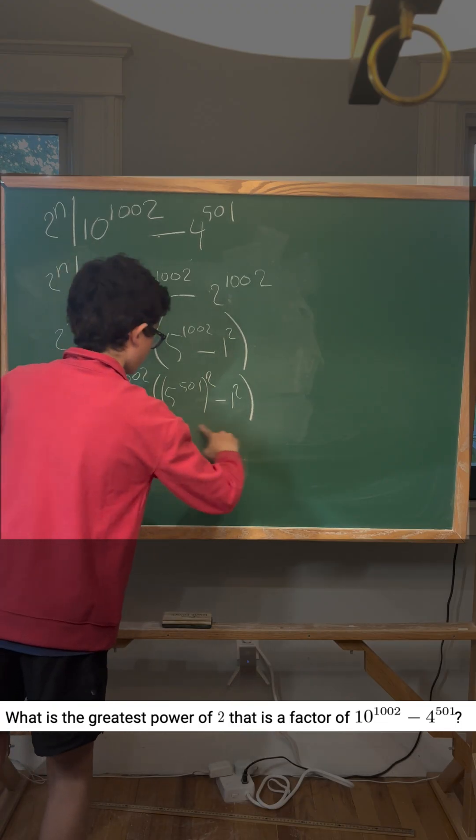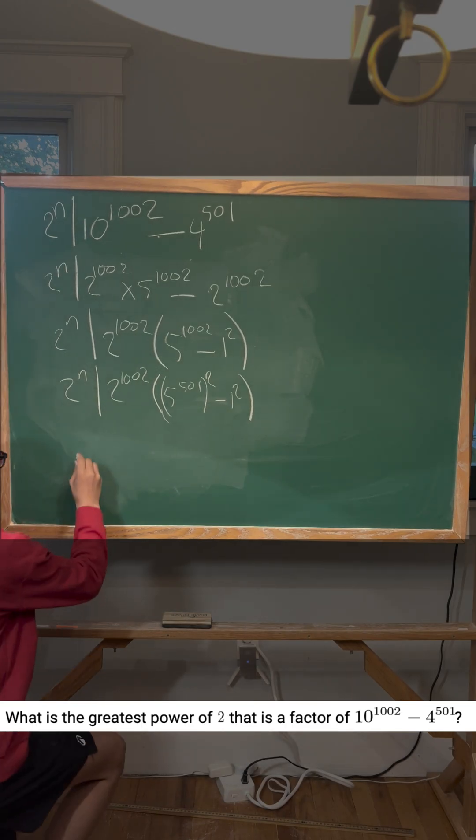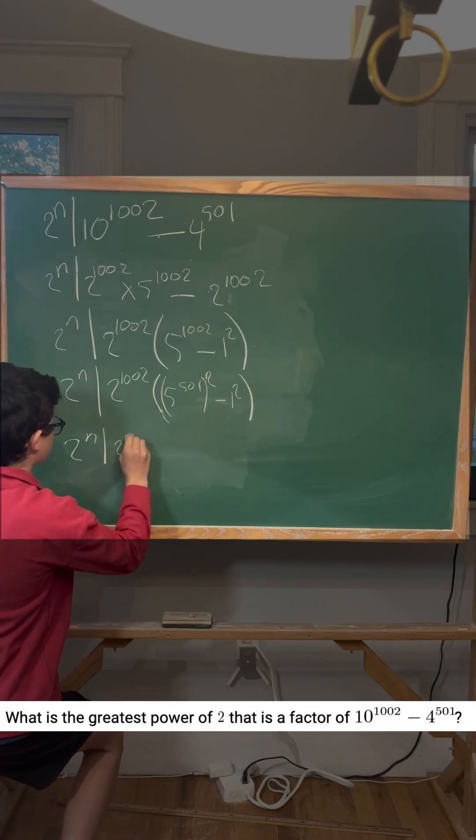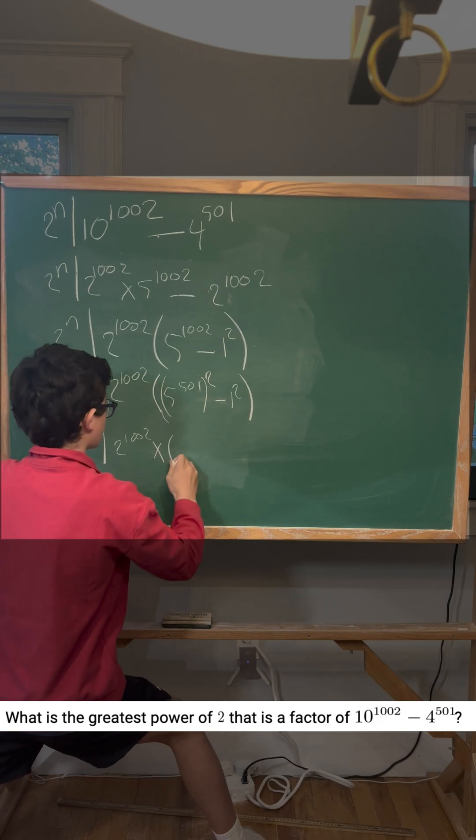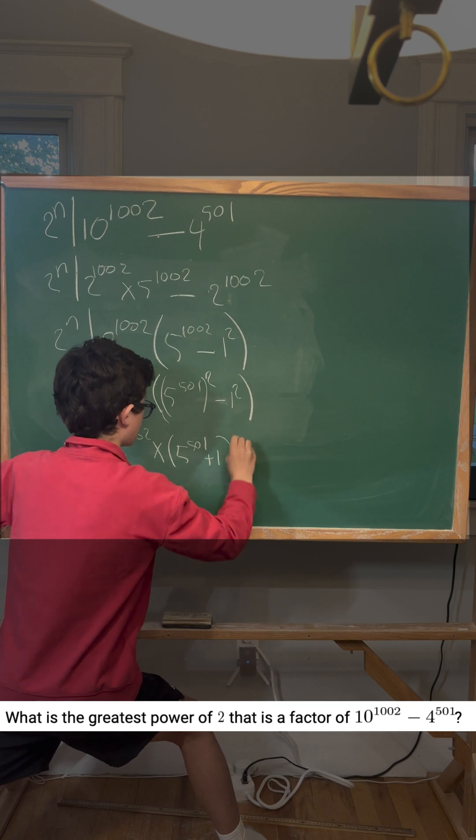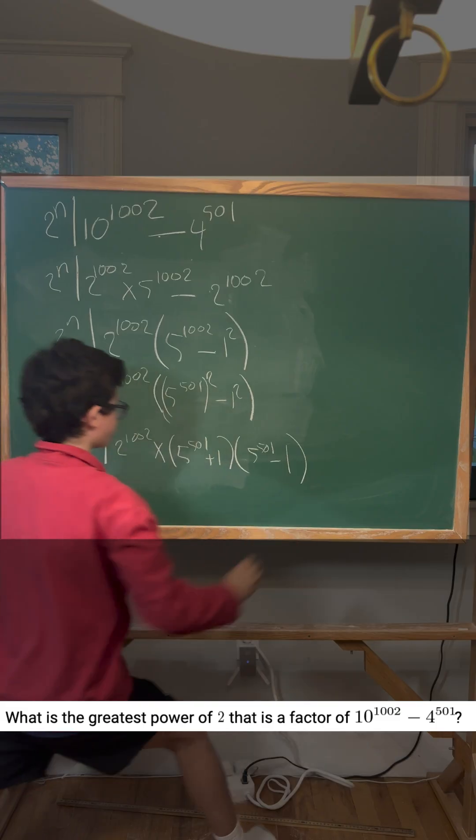We know we can rewrite this as a minus b times a plus b. So we would write 2^n divides 2^1002 times (5^501 plus 1) times (5^501 minus 1).